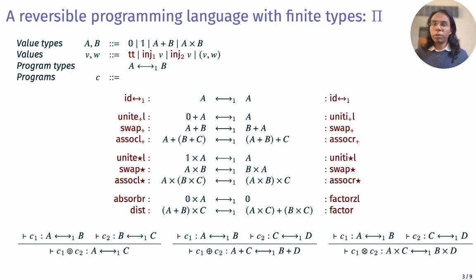These primitive combinators for transforming trees are our building blocks for a reversible programming language called Pi. This language has finite types given by 0, 1, plus, and times, and a special kind of program types for type isomorphisms. These are given by 1 combinators for units, swaps, associativity, and so on, and they can be composed in many different ways using higher-order combinators.